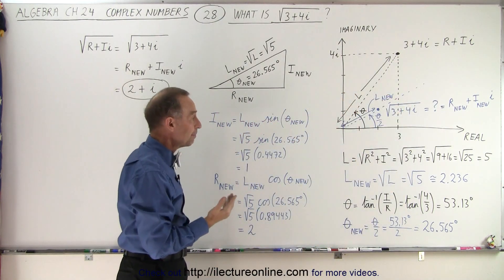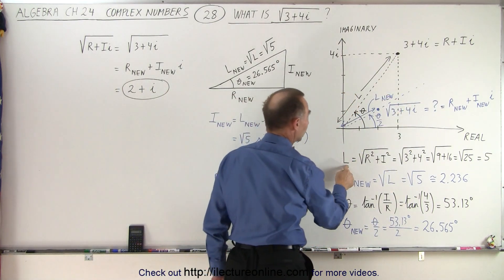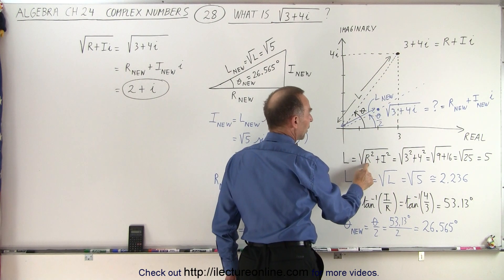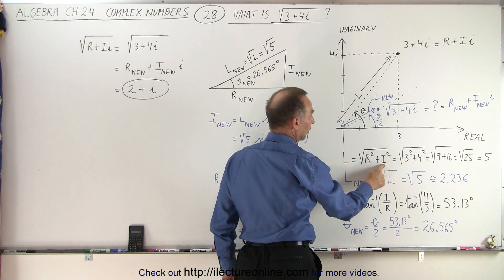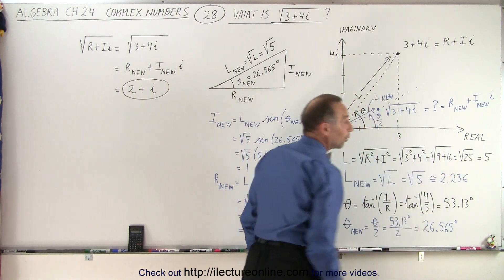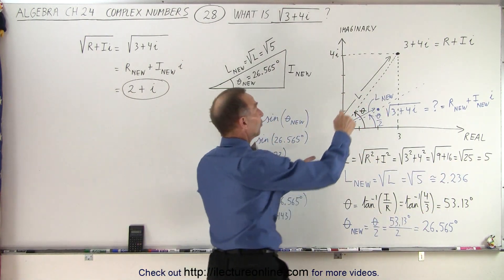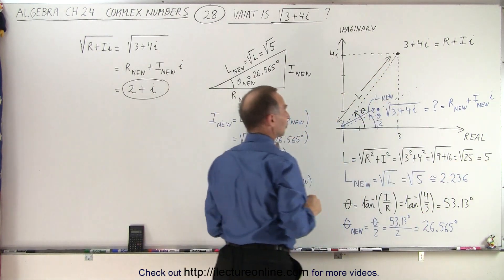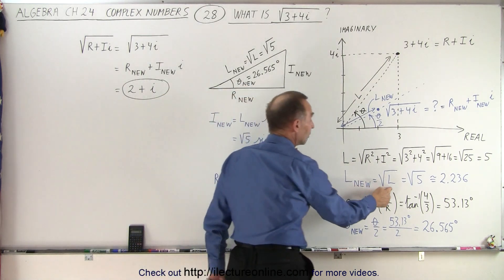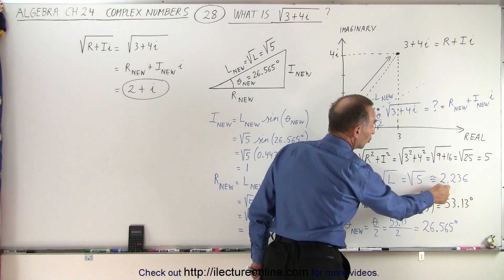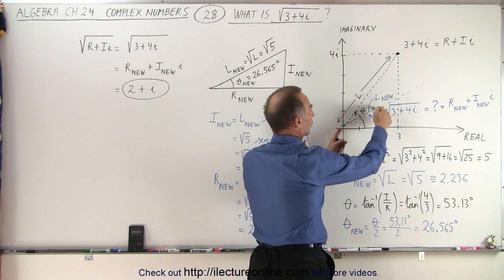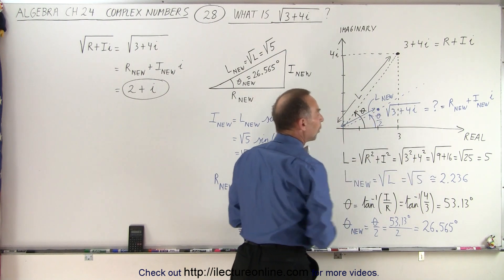So what that means is we first calculate the original length to the complex number. We take the square root of the real part squared plus the imaginary part squared — that's the square root of 3 squared plus 4 squared, essentially the square root of 25, which equals 5. That means the length to our complex number is 5. The new length will then be the square root of that: the square root of 5, which is approximately 2.236. So the distance to our square root will be 2.236.